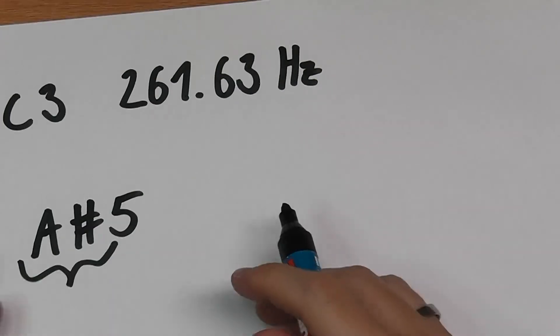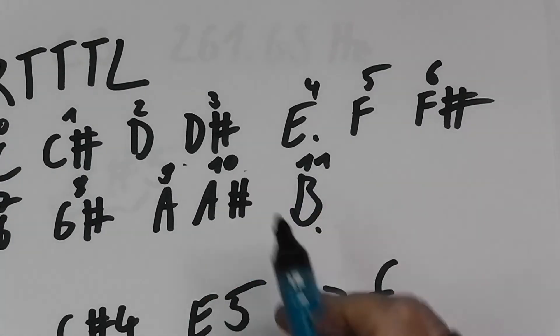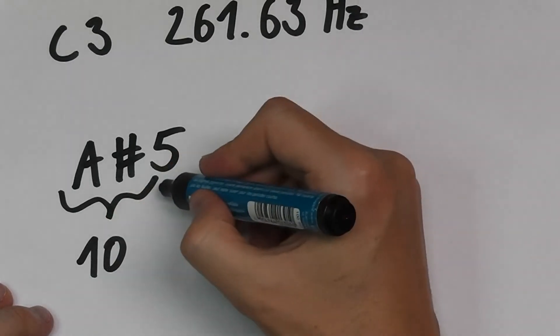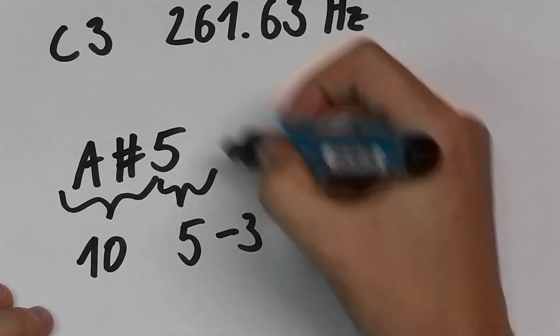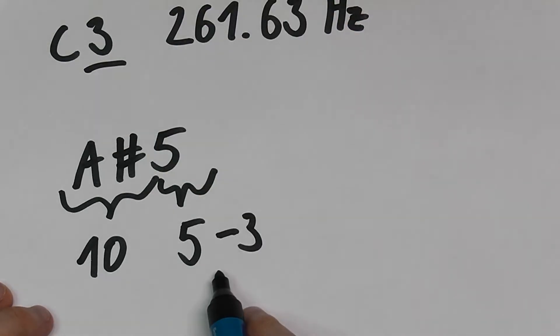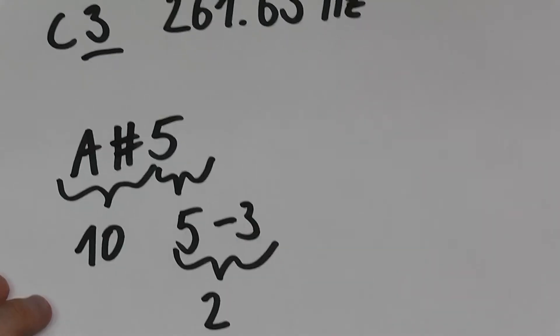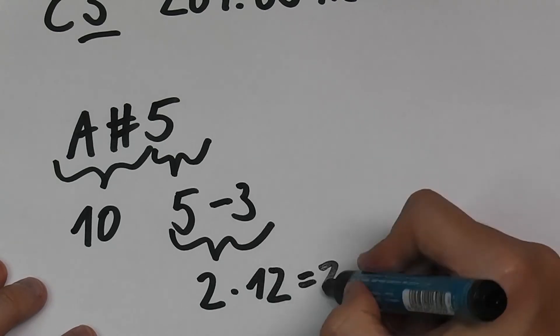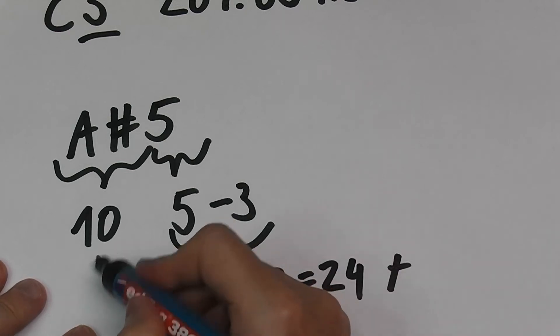First, A sharp as we saw in the previous slide has the offset 10, and 5 is 2 octaves from our base point. So we multiply that 2 by 12, get 24, and we add the 10 from here.